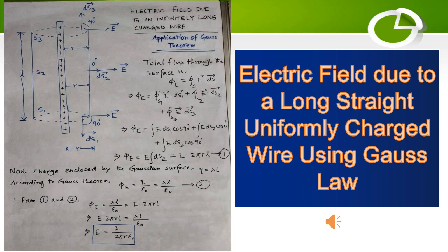We have taken a thin infinitely long straight current carrying conducting wire that has a uniform line charge density lambda.